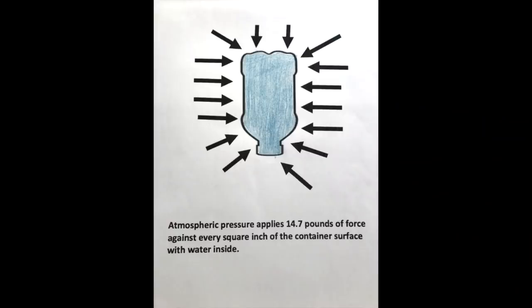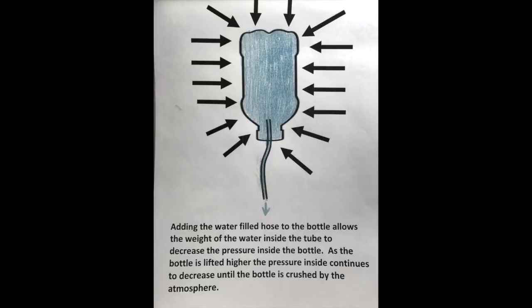The bottle filled with water also starts out with equal amounts of pressure inside and outside the bottle. But by attaching that long hose, the weight of the water inside the tube reduces the pressure.